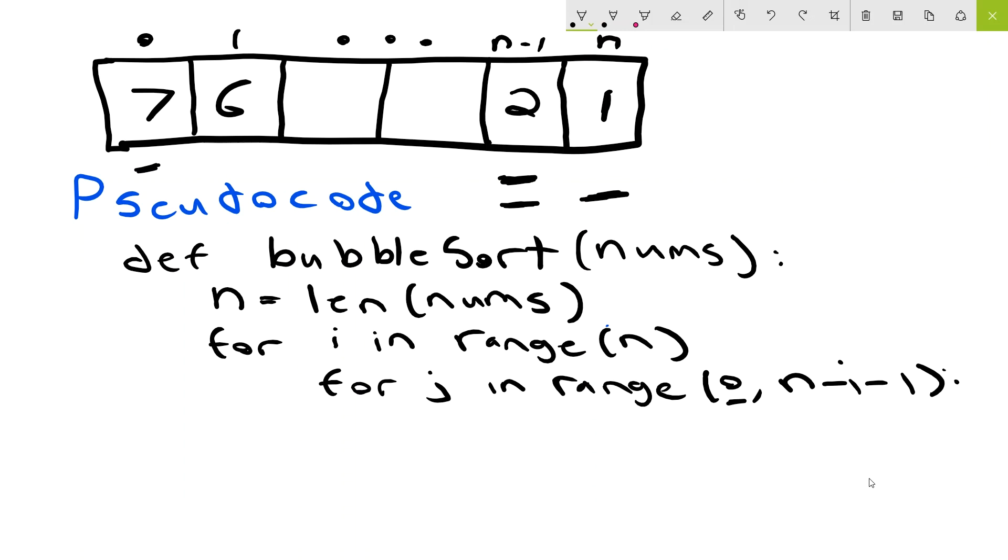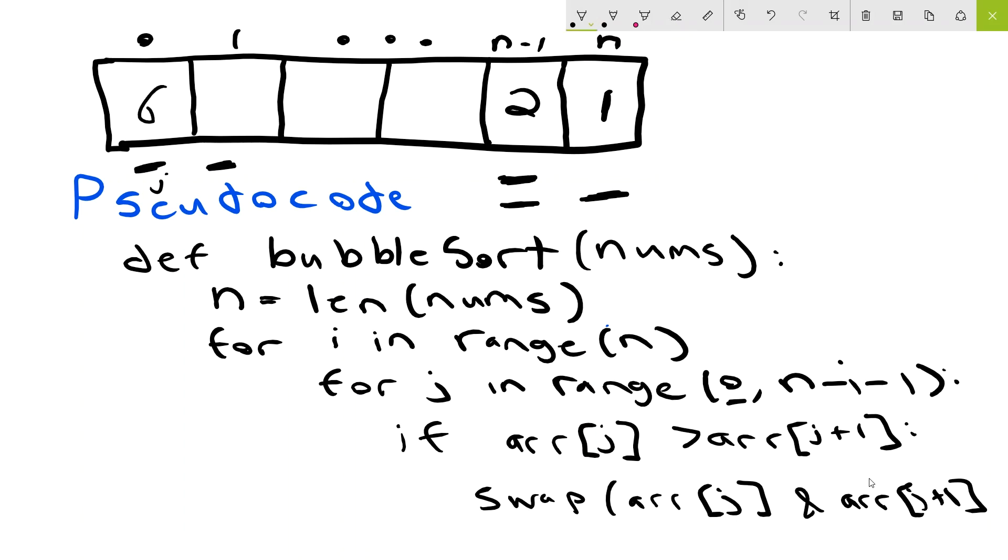So the last step is to compare the adjacent pairs. So to compare like the 7 and 6, for example. Well, to do this, we'll have an if statement. We'll do if array jth element. So we're looking at the jth element right now. So any one of those elements. So this could be j. And if that is greater than array j plus 1, well, in this case it is, we just want to swap array j and array j plus 1. So in this example, the 7 and the 6 were, in fact, in the wrong order. So we would swap it up. So we'd have this be 6 and then 7.